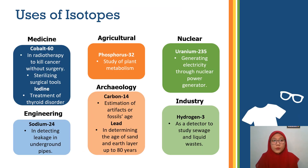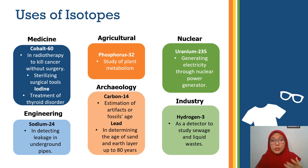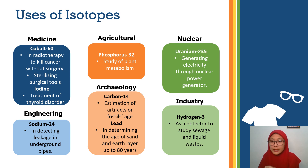Let's move to the uses of isotopes. Isotopes can be applied in several industries. For example, in medicine, they use Cobalt-60 in radiotherapy to kill cancer without surgery, targeting the cancer cells. Cobalt-60 is also used to sterilize surgical tools. Iodine is used for the treatment of thyroid disorders.